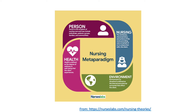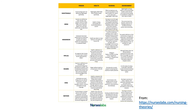This might be a more helpful representation. It basically says the person is the recipient of nursing care and may include individuals, patients, groups, families, and communities. Nursing is the attributes, characteristics, and actions of the nurse providing care on behalf of or in conjunction with the client. The environment or situation is defined as the internal and external surroundings that affect the client. And health is defined as the degree of wellness or well-being that the client experiences.